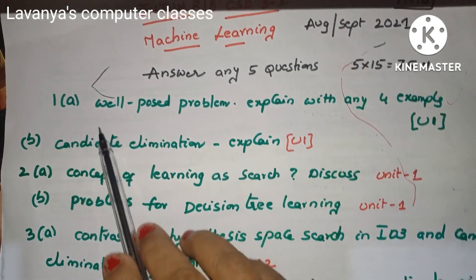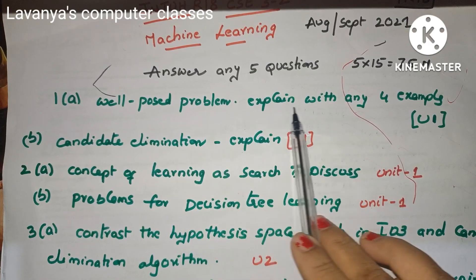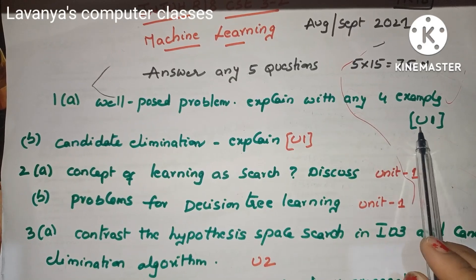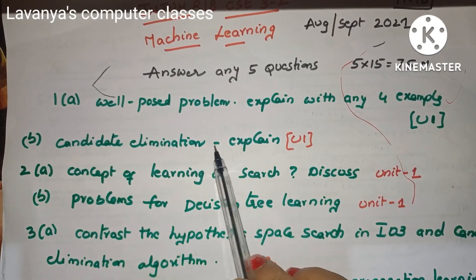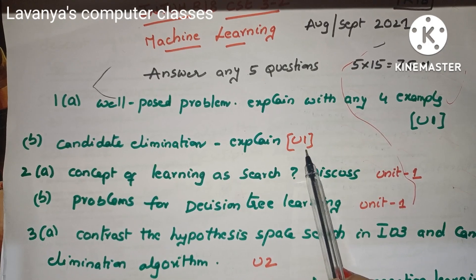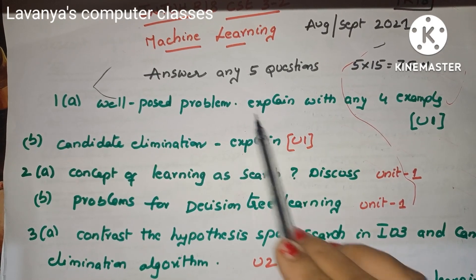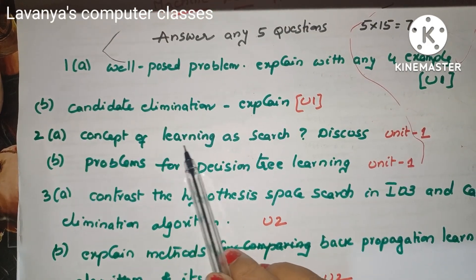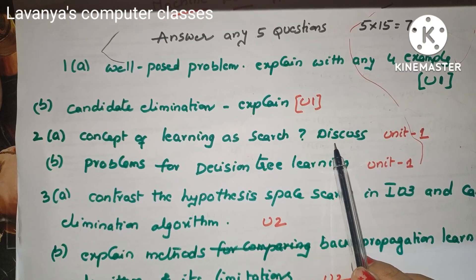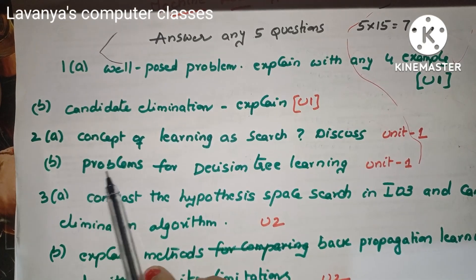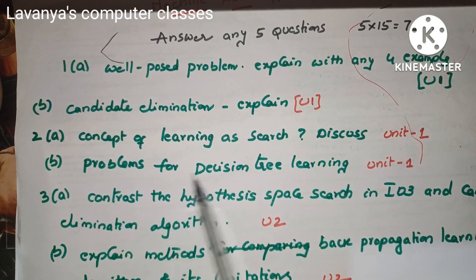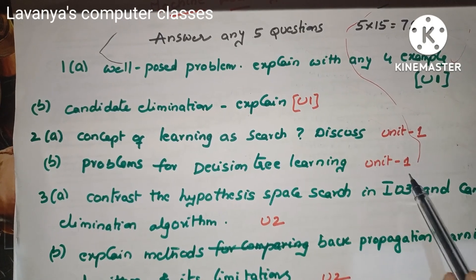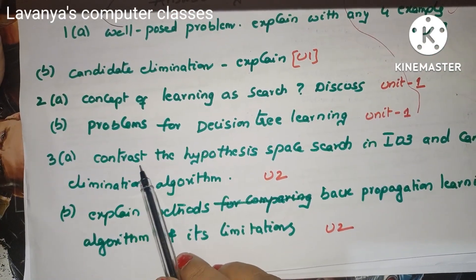Question 1(a) is 'Explain well-posed problem with any four examples' — this is from Unit 1. Question 1(b) is 'Explain the Candidate Elimination algorithm with an example' — also from Unit 1. Question 2(a) is 'Explain the concept of learning as search' — from Unit 1. Question 2(b) is 'Discuss the problems for Decision Tree learning' — also from Unit 1. So the first two questions are entirely from Unit 1.